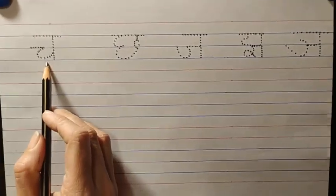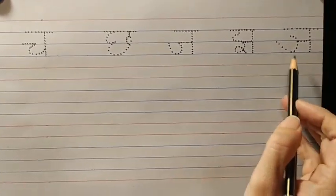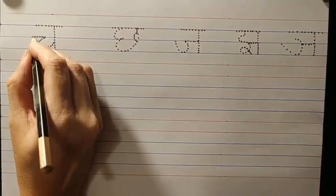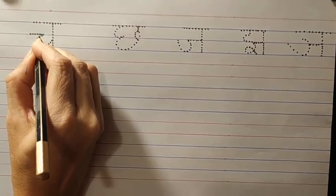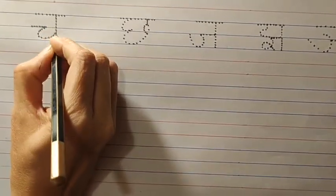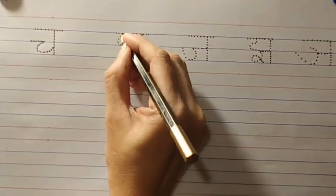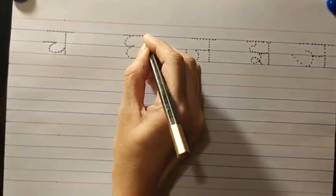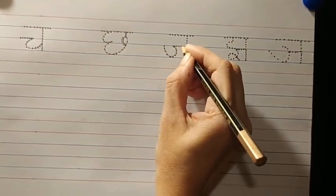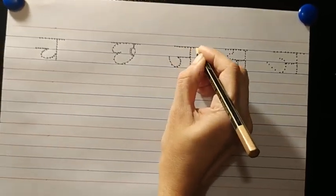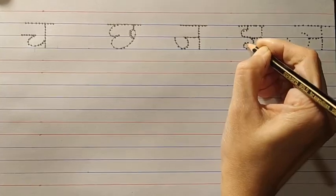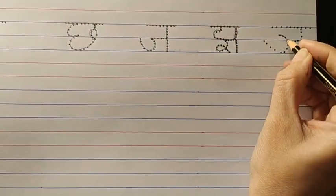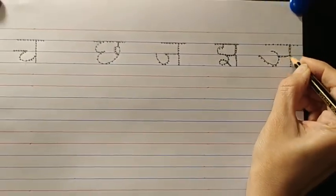Now, we will write Ch, Ch, Jha, Jha, Jha, Nya. First, we have to trace along the dotted lines. You can see the dotted lines and we are going to trace it like this — Ch, then Ch, then Jha, then Jha, and then Nya.